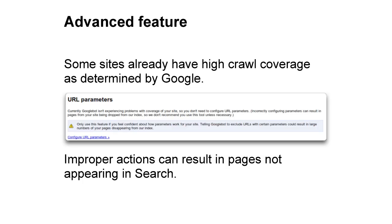URL parameters is a fairly advanced feature, so some of this information might be more complex than one would expect. Before you watch this video further, please check out the URL parameters page to see if you have a message from Google explaining that we already believe we have high crawl coverage of your site, and therefore no adjustments to this feature are necessary. The message would say: 'Currently Googlebot isn't experiencing problems with coverage of your site, so you don't need to configure URL parameters.' Incorrectly configuring parameters can result in pages from your site being dropped from our index, so we don't recommend you use this tool unless necessary. For those of you who have that message, you're good to go, and no further viewing is even necessary.